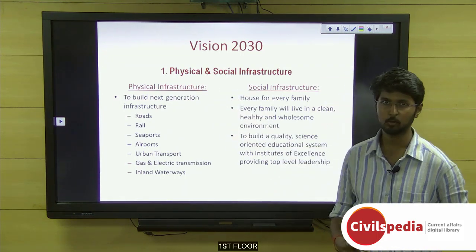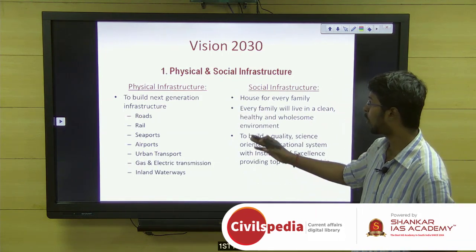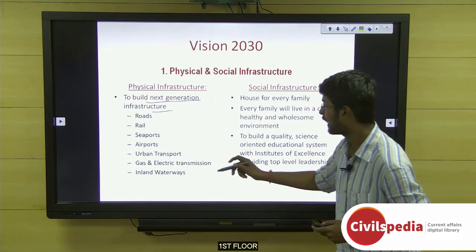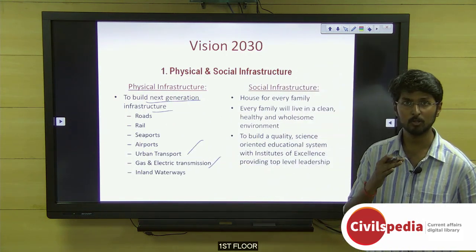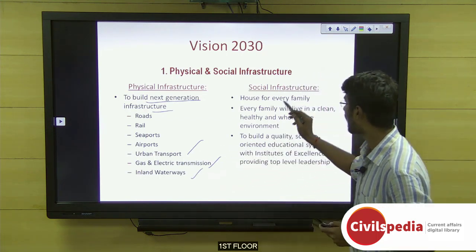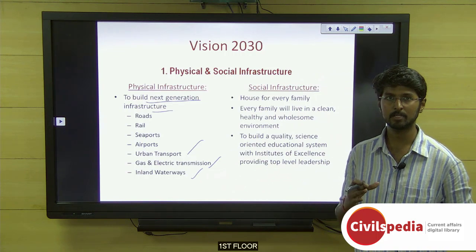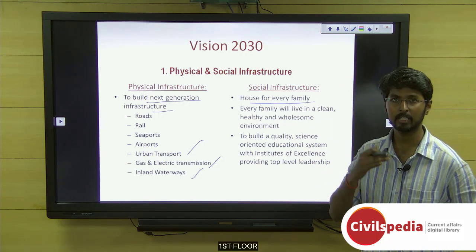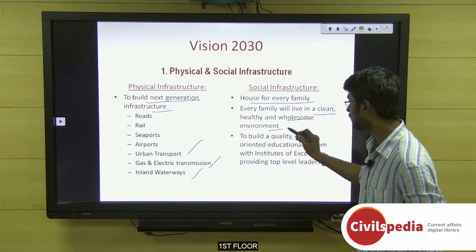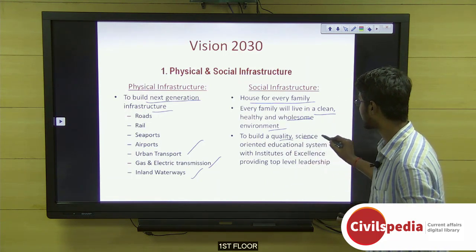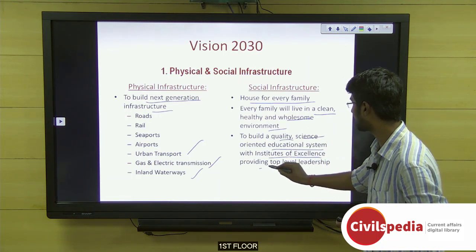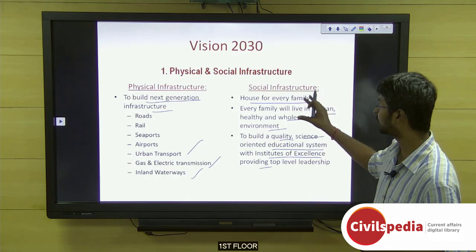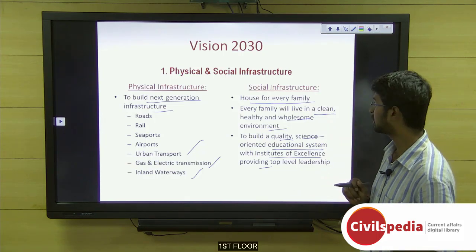Under physical and social infrastructure (dimension 1), the government intends to build next-generation infrastructure including roads, rails, seas, air, urban transport, gas and electric transmission, and inland waterways. Under social infrastructure, the government aims for a house for every family in a clean, healthy, and wholesome environment, and a quality science-oriented educational system with institutes of excellence providing top-level leadership to private companies and the government.